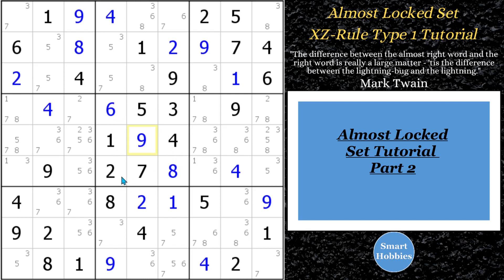Greetings friend. This is part two of my almost locked set tutorial. In this video I'm going to build upon what I talked about previously with XYZ wings and WXYZ wings, and talk about some more unique cases of using the almost locked set XZ rule to make candidate eliminations. I'll explain all the expert tips and tricks as I do it in definitions. Click on the link below if you want to try some of these puzzles yourself.